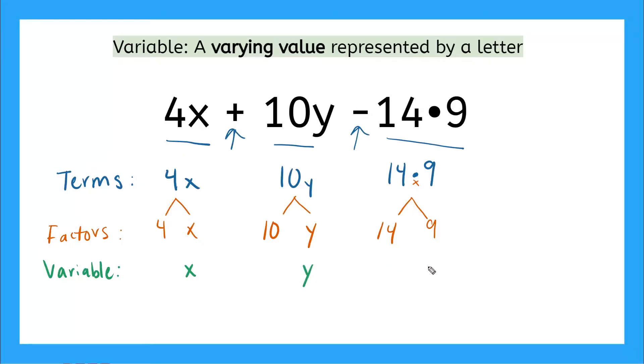Now in our third term, are either of these factors of varying value? No, we don't have any variables here. So there's none in our third term.